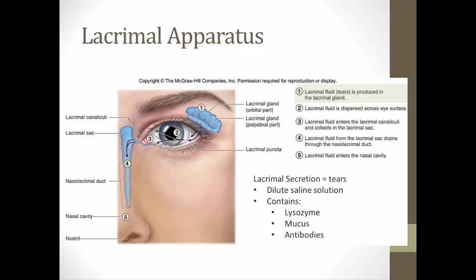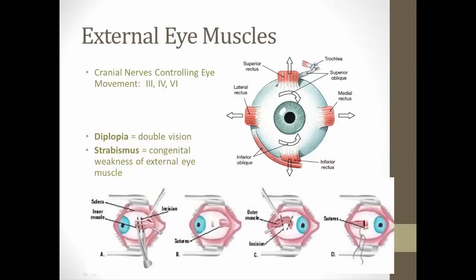Tears are made in the lacrimal gland, then dispensed over the eye surface, where they collect in the lacrimal canaliculi — the small openings visible as little black dots on the inside corner of both upper and lower lids. From there, fluid enters the lacrimal sac, then through the nasolacrimal duct into the nasal cavity. Overproduction of tears from crying or irritation will fill the nasal cavity and cause your nose to run.